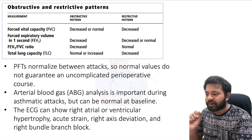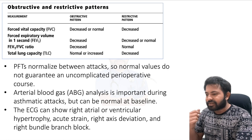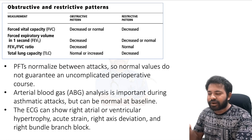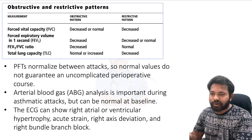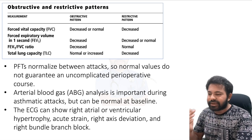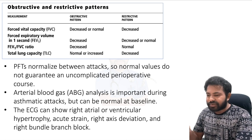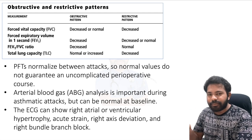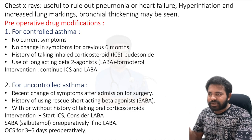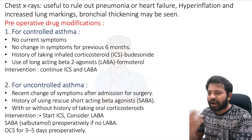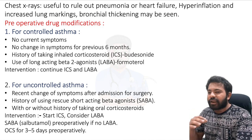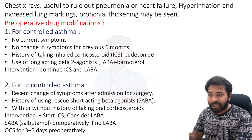Other investigations include arterial blood gas analysis, which is important during asthma attacks but may be normal at baseline — look for hypercarbia. On ECG, you may find right atrial or ventricular hypertrophy, acute strain, right axis deviation, or right bundle branch block. Chest X-ray can rule out pneumonia or heart failure, and may show hyperinflation of the lung fields, increased lung markings, and bronchial thickening.